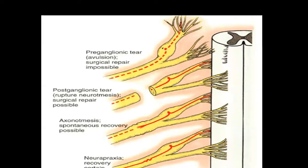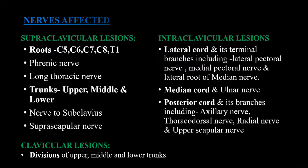In this schematic diagram, you can see that in the first type, pre-ganglionic fiber tears occur where surgical repair is impossible. In the second type, post-ganglionic tear, surgical repair is possible. In the third type, axonotmesis, and then neuropraxia.